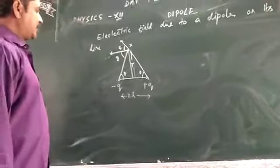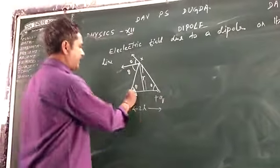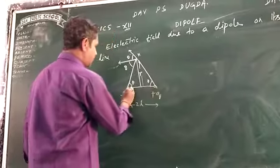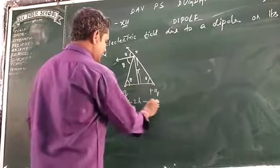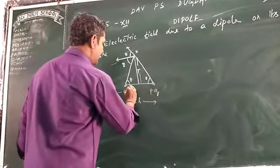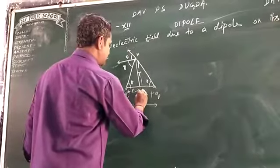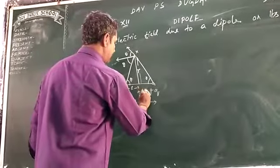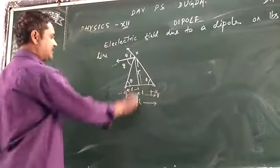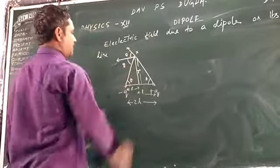This is your figure: this is your +q charge, this is your -q charge, and they are separated by distance 2L, so this length will be L and this length will be L. This distance is r.